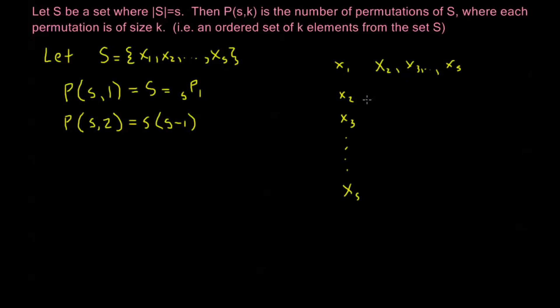So x₂ is going to be in the permutations with x₁. I'll have x₂x₃, I'll have x₂x₄, etc., all the way to x₂xₛ. And continuing on in this way, we see that P(s,3),